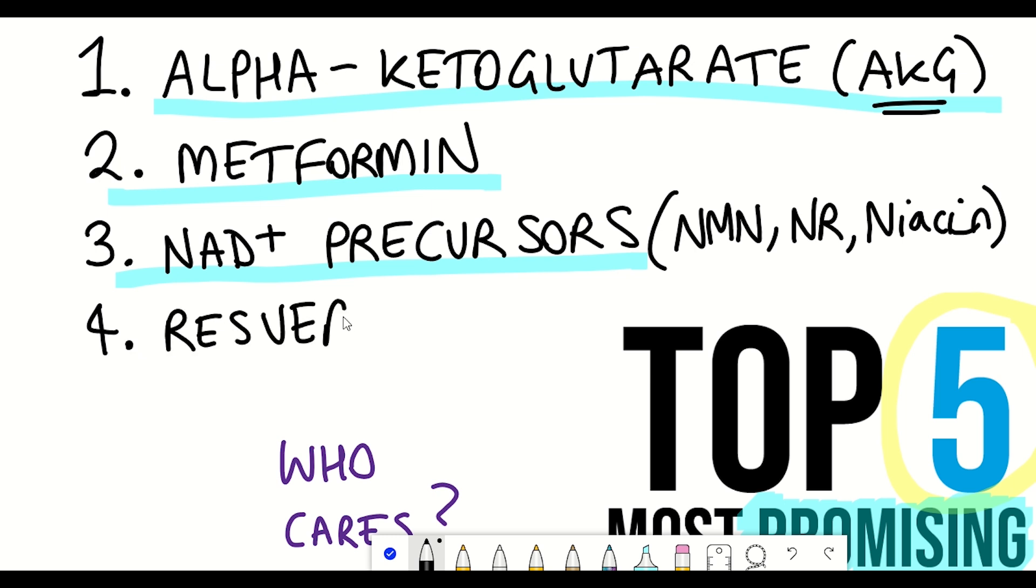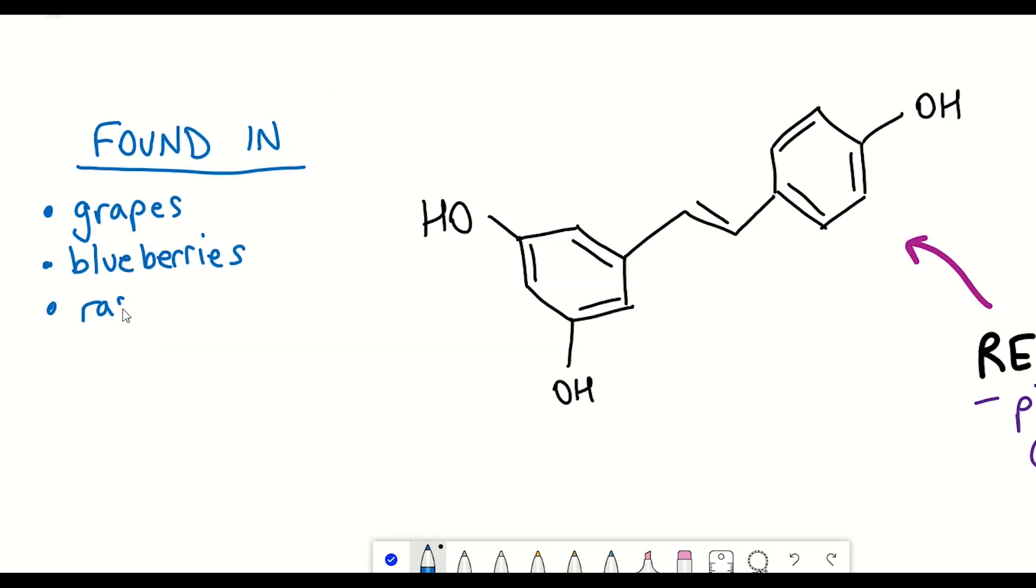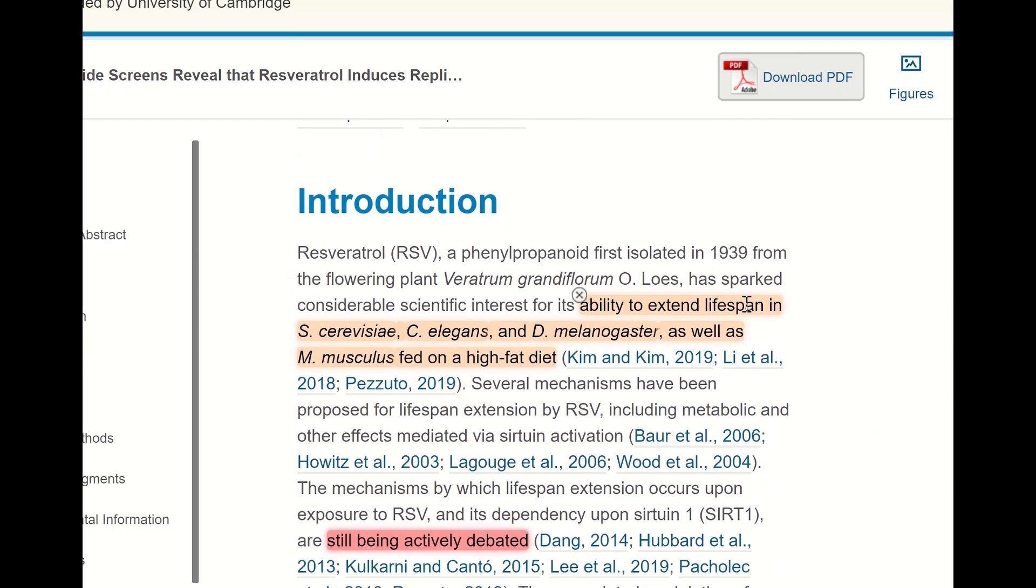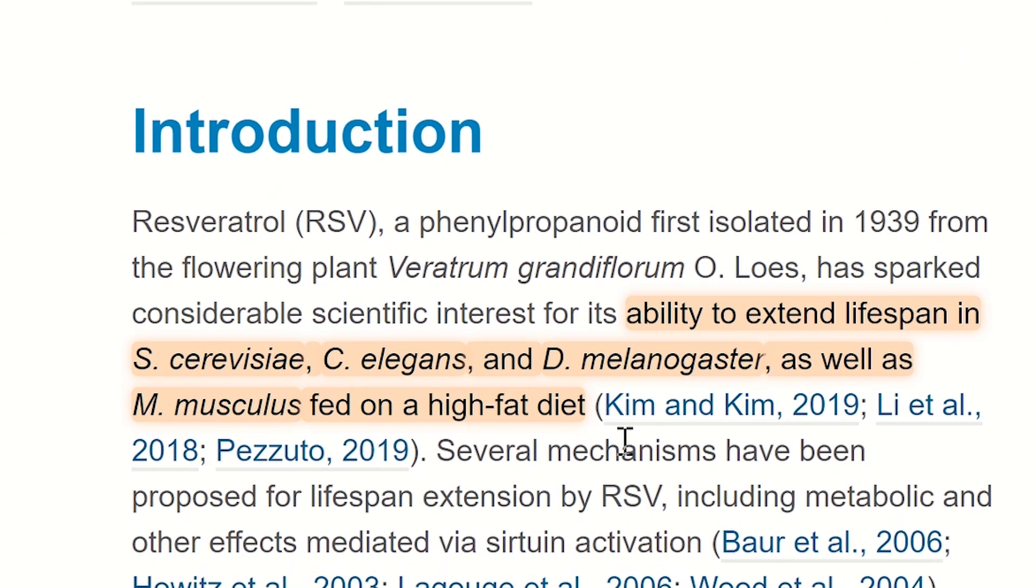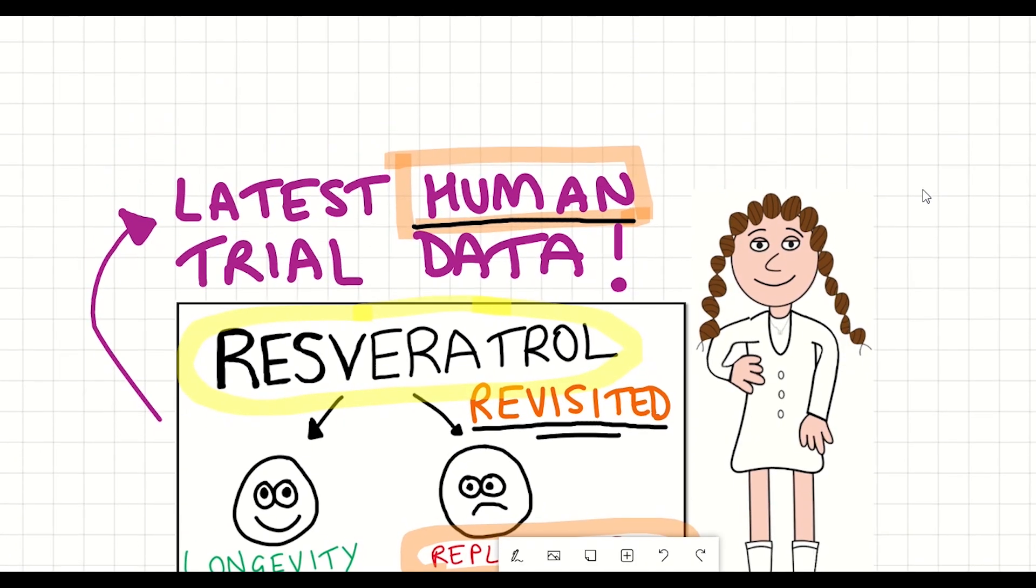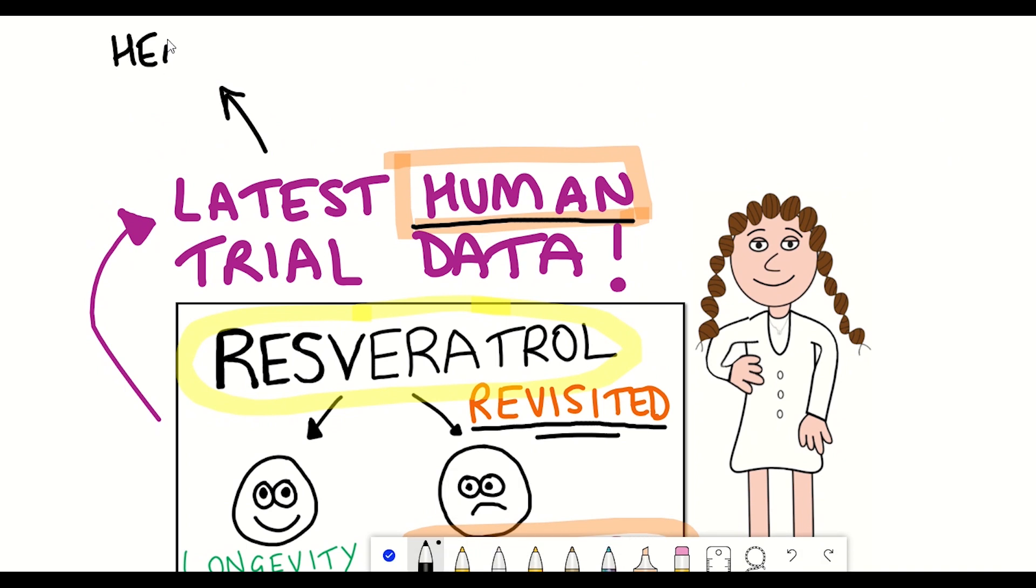Now, next up is resveratrol, which is another compound that can be found in food, this time in the skin of grapes, blueberries, raspberries, and peanuts. Now, literally in my last video I spoke about resveratrol, so I'll probably keep it quite brief here. Anyway, resveratrol has been shown to extend lifespan in yeast, worms, fruit flies, and mice when fed on a high-fat diet. And as I mentioned in this video earlier this week, there's some human trial data whereby resveratrol seems to be alleviating the symptoms of heart disease and muscular dystrophy.